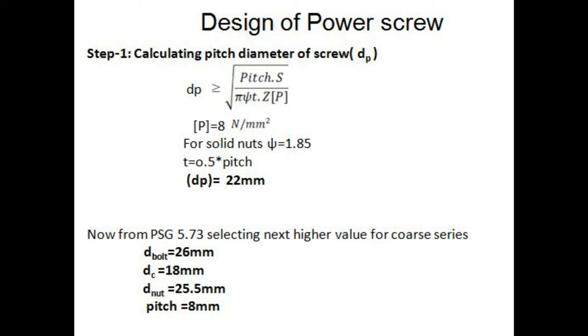The dp pitch diameter is coming out to be 22 mm. Now from PSG 5.73 selecting next higher value for coarse series. Diameter of bolt is 26 mm, core diameter is 18 mm, nut die is 25.5 mm, and pitch equal to 8 mm.